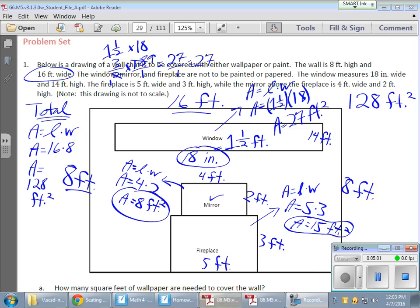Now why are these values important? These values are important because they're not being wallpapered. The entire wall's area is 128 square feet. In order for me to find out exactly how much wallpaper I need, I will remove the parts that I'm not wallpapering—like the window with 27 square feet, the area of the mirror which is 8 square feet, and the area of the fireplace which is 15 square feet. So I can combine all those areas: my 27 from the window, the 8 from the mirror, and the 15 from the fireplace.